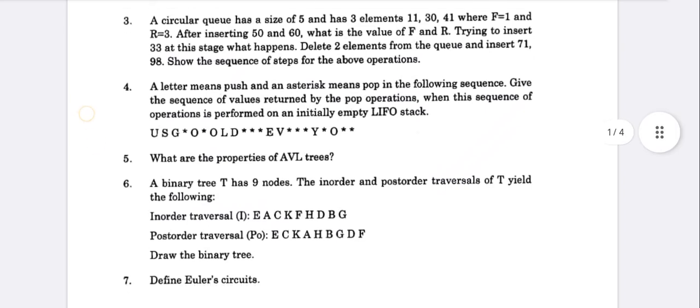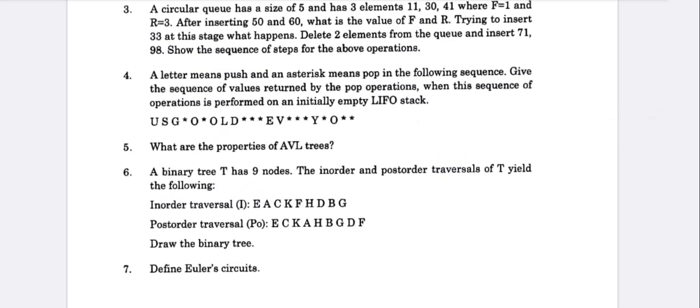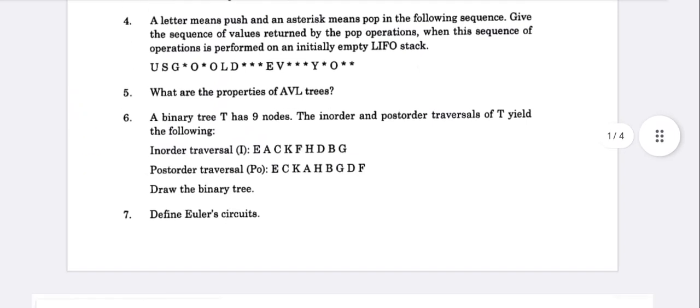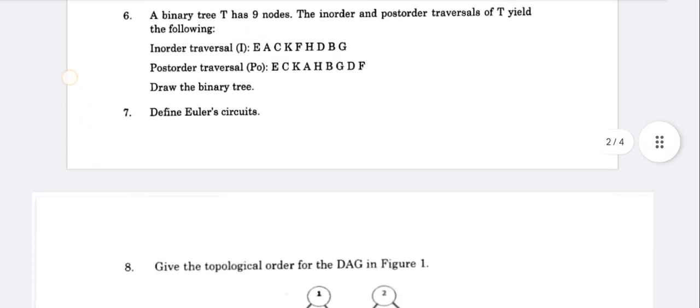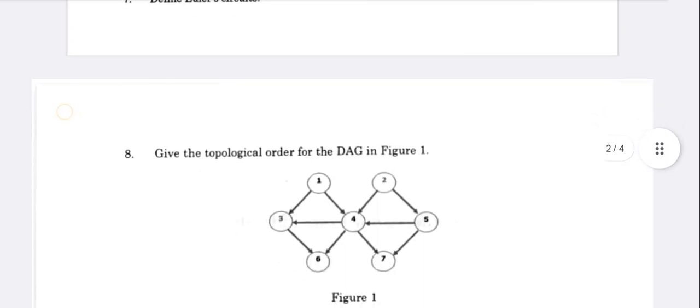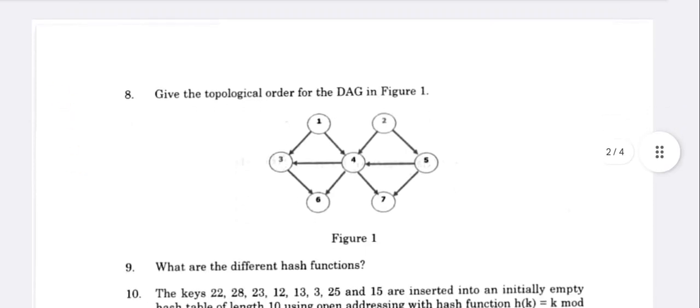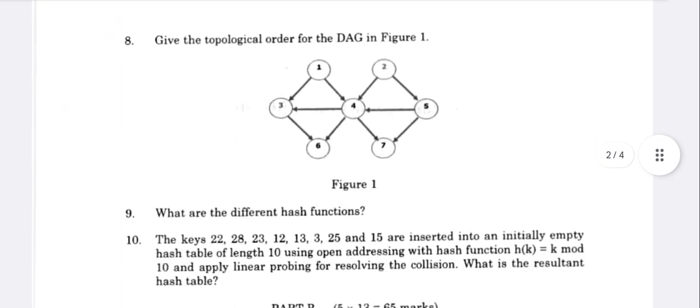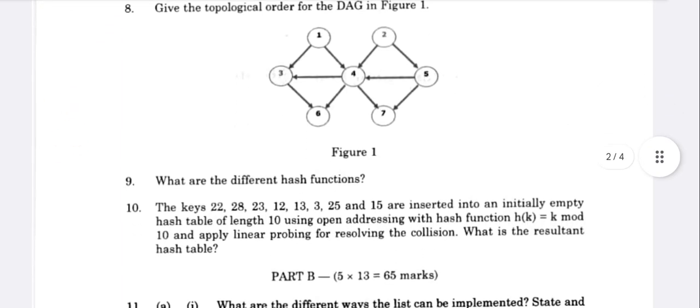Sixth one: Binary tree T has 9 nodes, draw the binary tree. That's easy. Define Euler circuits. Give the topological order for the DAG in Figure 1. This is very easy. What are the different hash functions? What is the resultant hash table?